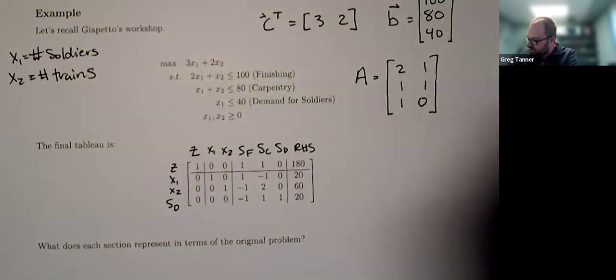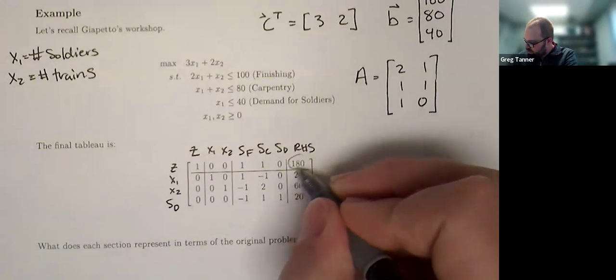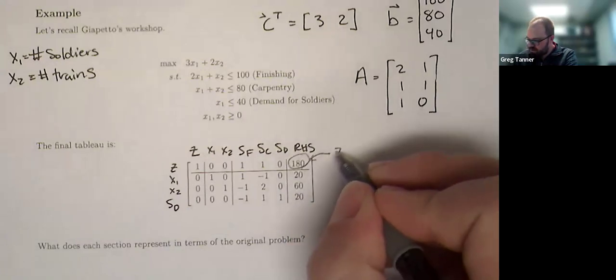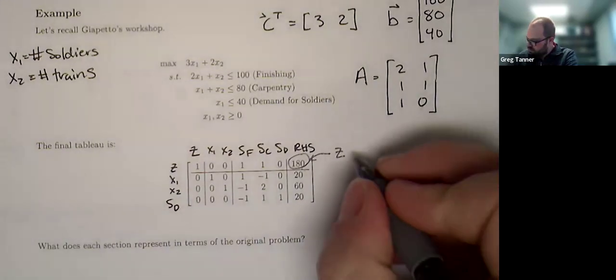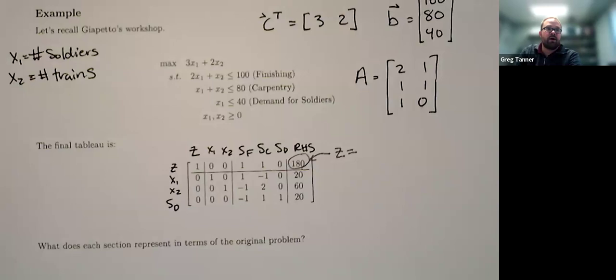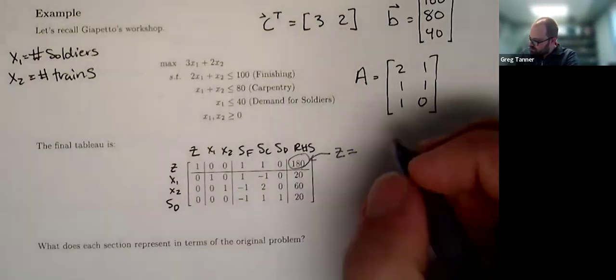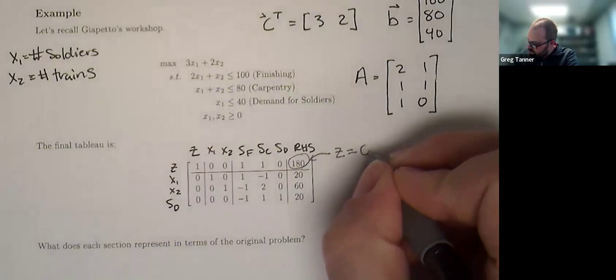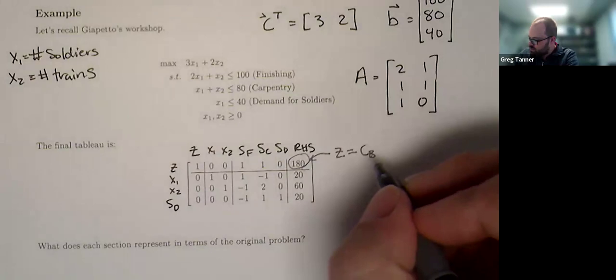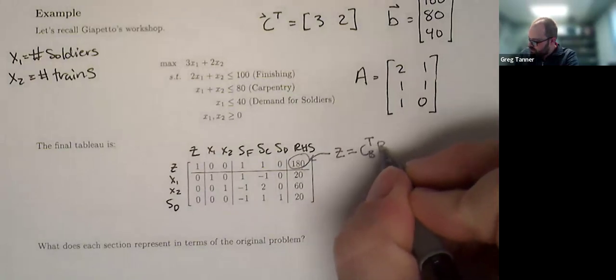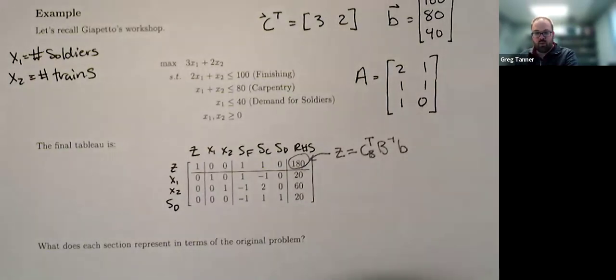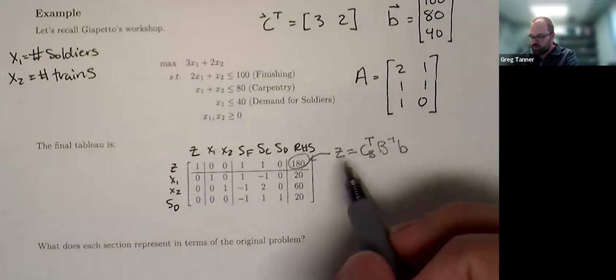Here, this 180, that's the current objective value. And so that's equal to a couple different ways we could represent that value. If we look at just the values of the cost or the C vector corresponding to our basis, take the transpose, multiply that by B inverse, and then by B, that's one way to compute this value of Z.